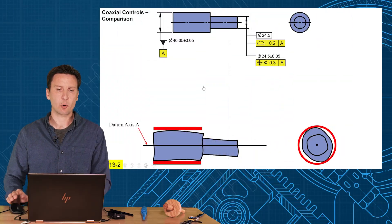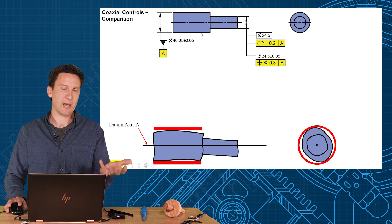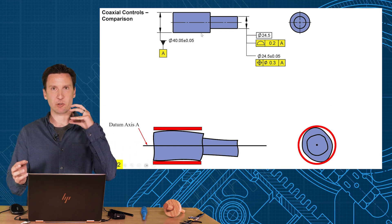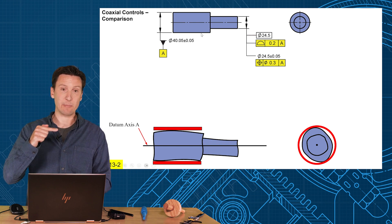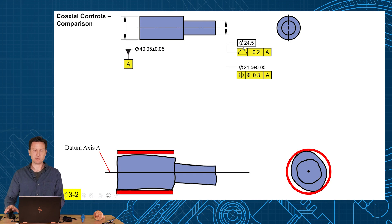So first let's do a quick summary of what the difference is between position and profile. We have a simple example here with a shaft. We have the larger diameter identified as A. That creates a datum axis and we want to make sure these are centered on that. So we had a couple of options here, profile and position. We're going to leave runout out of the conversation for this one.